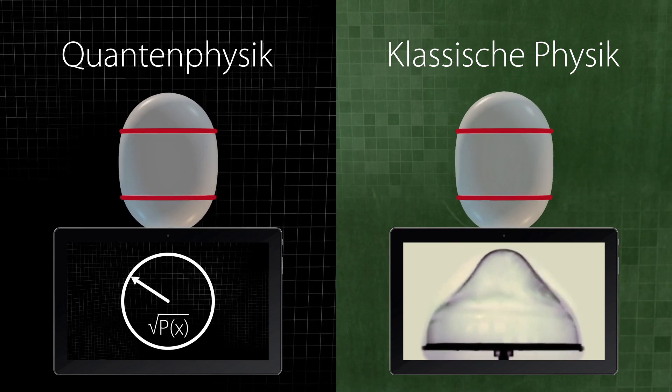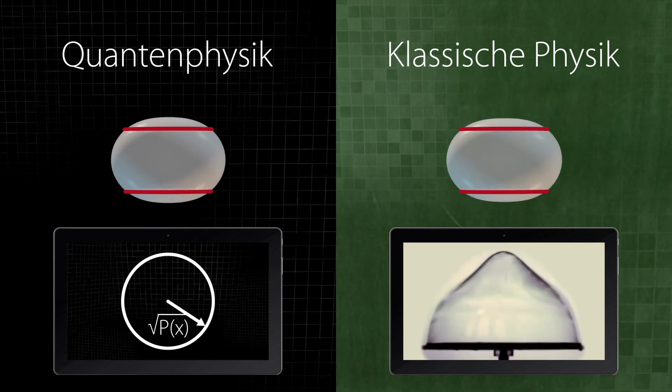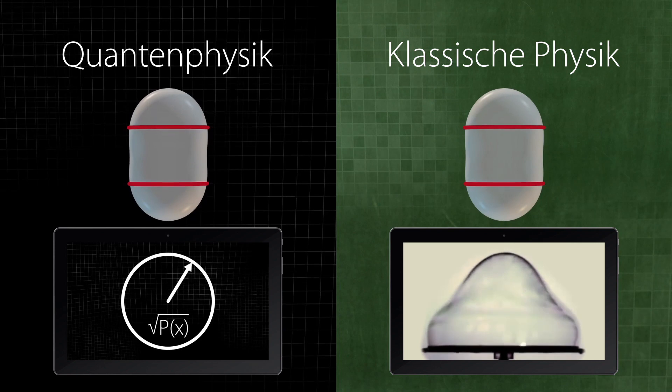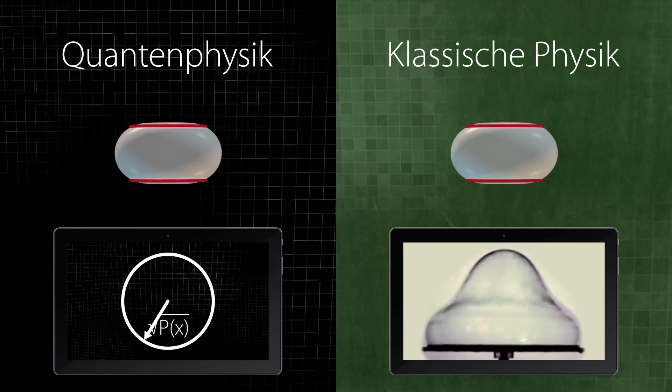In quantum physics, we have a vibration that is not directly observable. We could interpret it as a square root of a probability or as a wave function.